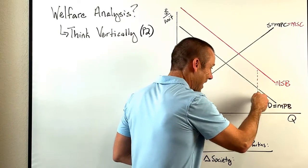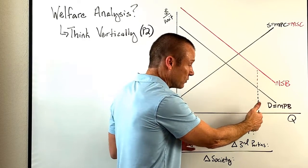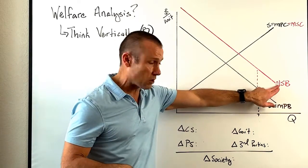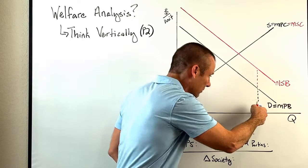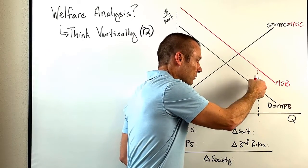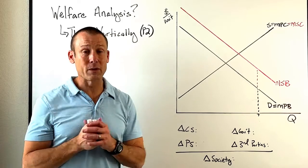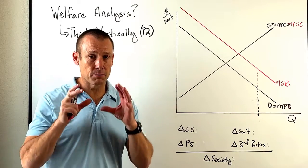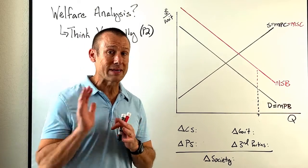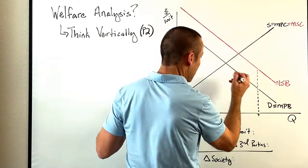That entire vertical from the dot straight down to the unit of output is the societal benefit - the marginal societal benefit for that particular unit of output. Private benefit to the consumer plus benefit to third parties equals the total societal benefit. So we have a positive externality from consumption. What do we do? We generally subsidize it because we want to increase production.